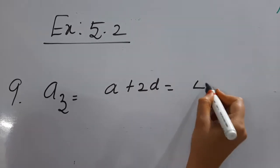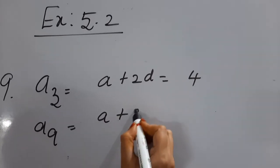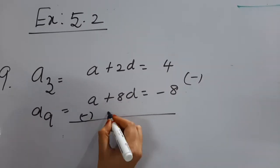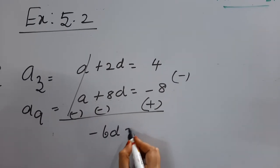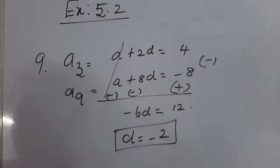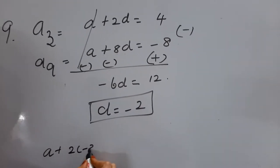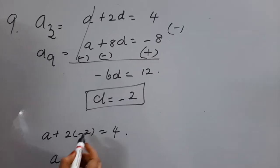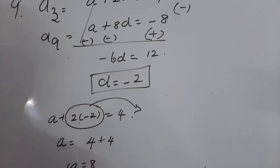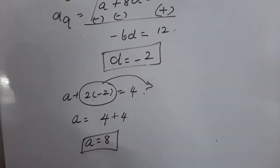A3 = A + 2D = 4, and A9 = A + 8D = −8. Using linear equations in two variables, find the difference: subtracting equation 1 from equation 2 gives −6D = 12, so D = −2. Substituting D = −2 into equation 1: A + 2×(−2) = 4, so A − 4 = 4, giving A = 8. We found A = 8 and D = −2.